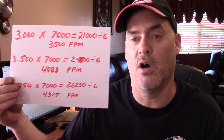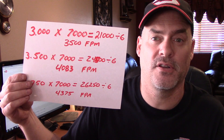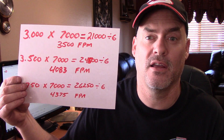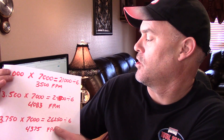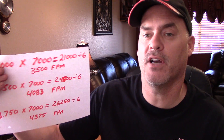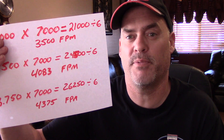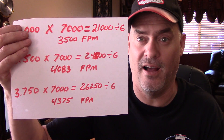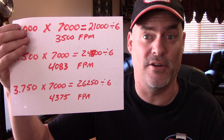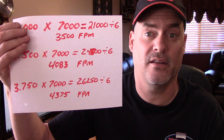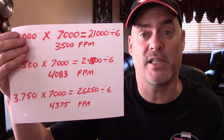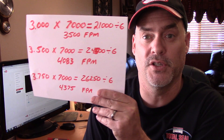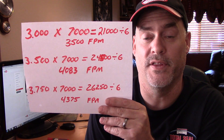If we bump that up to a 351 or 350 engine, which has right around a 3.5-inch stroke: 3.5 times 7,000 equals 24,500, divided by 6 gives a piston speed of 4,083 feet per minute. With a 3.5-inch stroke, 7,000 RPMs is really pushed — that's kind of your red line. You're really pushing the motor right there, unless you build a dedicated race motor. So we really wouldn't want to turn a 350 Chevy or 351 Windsor any more than 7,000 RPMs.